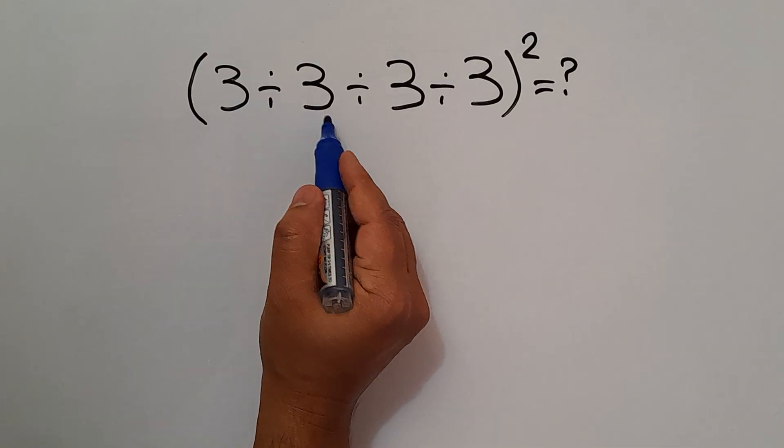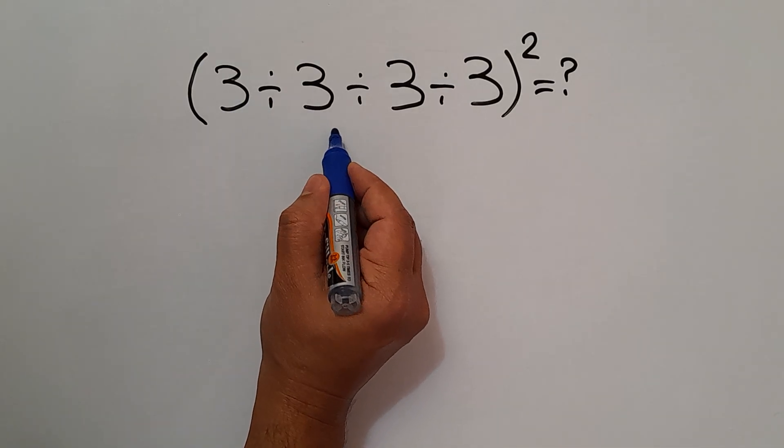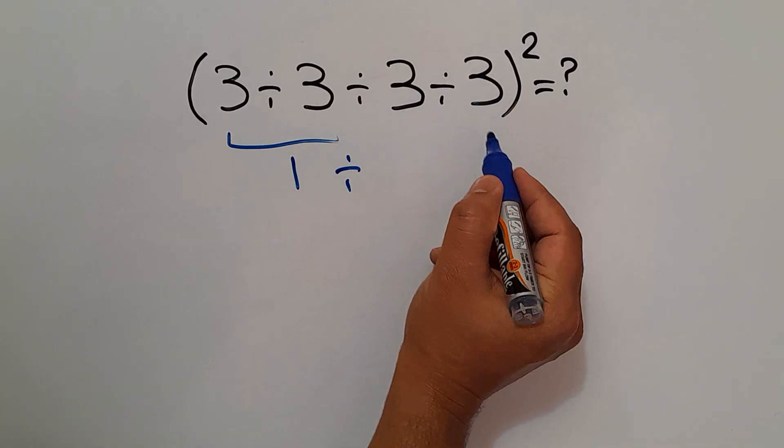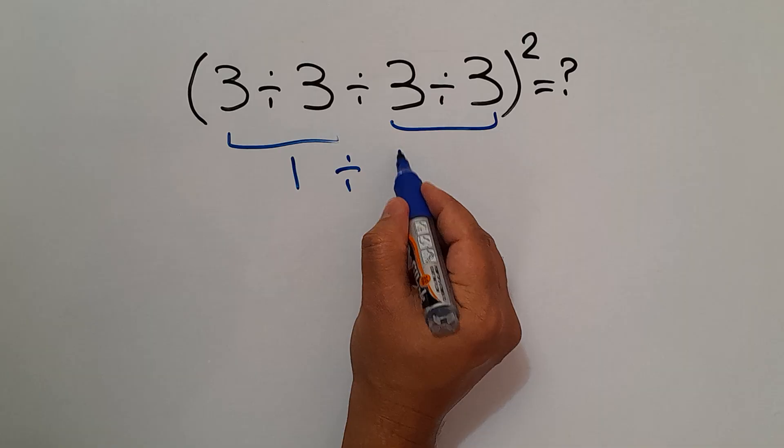3 divided by 3 equals 1. So, 1 divided by, again we have here 3 divided by 3, which equals 1.